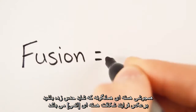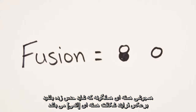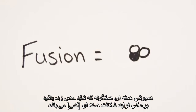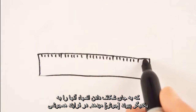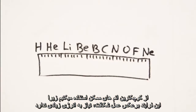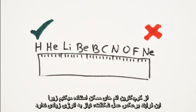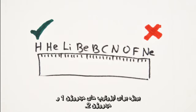Nuclear fusion, as you probably guessed, is the opposite of nuclear fission, as you fuse atoms together instead of splitting them up. In fusion, we use the smallest atoms we can get because it doesn't require as much energy as bigger atoms would to fuse — specifically the isotopes hydrogen-1 and hydrogen-2.